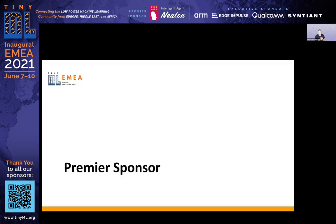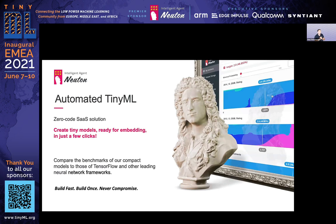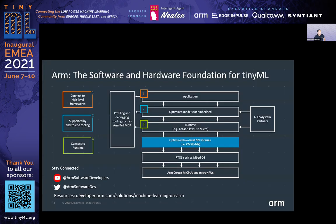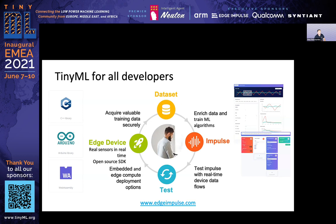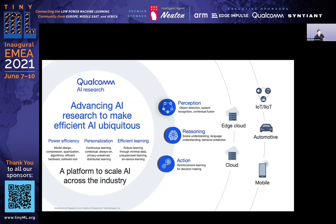Acknowledging the conference sponsors who made free registration possible. The premier sponsor is Newton.ai, innovating in the automated TinyML domain. Executive sponsors include ARM, which builds the software and hardware foundations for TinyML; Edge Impulse, advocating strongly for making TinyML available to all developers; Qualcomm, working on perception, reasoning, and action across edge and cloud devices in IoT, automotive, and mobile applications; and Sintiant, moving artificial intelligence from the cloud to the edge.